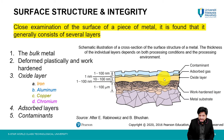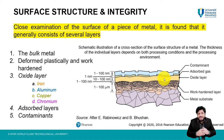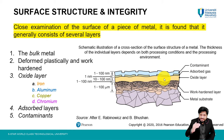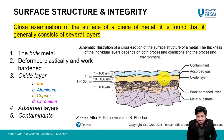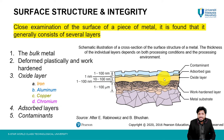For copper, when you machine it, it is very shiny and bright, but within a few hours copper oxide CuO starts to form and the surface becomes dull. For stainless steel, we want a corrosion-resistant material, so chromium oxide forms in the stainless steel and acts as a protective barrier against corrosion and corrosion products.